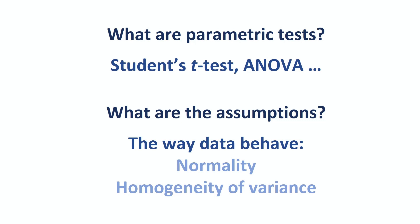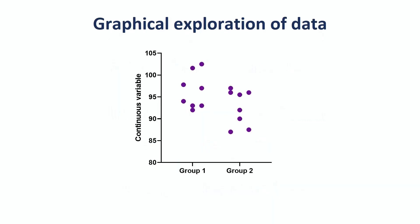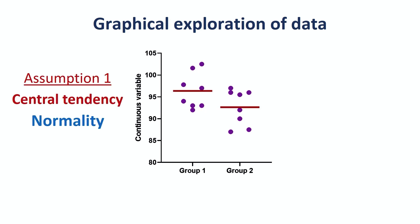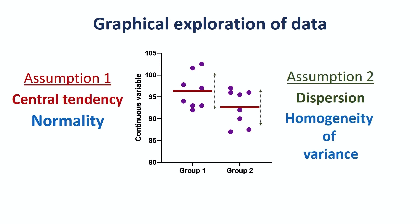If we want to apply any parametric statistical test, such as the t-test, we are talking about continuous data. Tests from the parametric family are happy to deal with data which behave in a particular way — that's what the assumptions are about. The first assumption is normality, which is about central tendency, or how we can best summarize data. The second is homogeneity of variance — the dispersion of the data, or how noisy they are, and more importantly, if they are noisy in a similar fashion within the different groups.